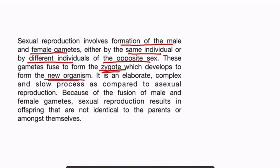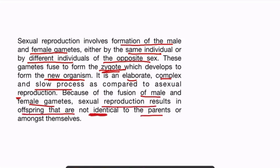It is an elaborate, complex and slow process as compared to asexual reproduction. Because of the fusion of male and female gametes, sexual reproduction results in offspring that are not identical to the parents or amongst themselves.